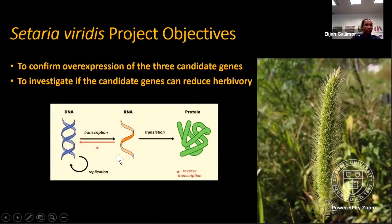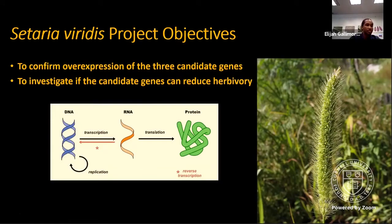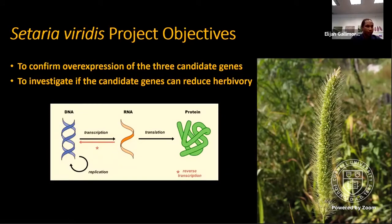So for project objectives: from the candidate transgenes introduced, effective overexpression means increased RNA levels, and we assume this means increased protein translated from that RNA. Hence, we are measuring the RNA or transcript level to determine if these genes are overexpressed. Once we confirm the overexpression, the next objective is to use comparative bioassays to investigate if this overexpression of these candidate genes provides Setaria plants with some resistance to fall armyworm herbivory.